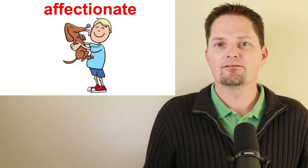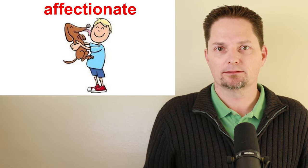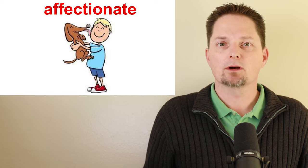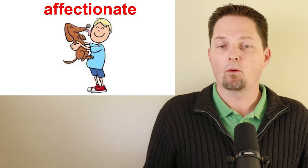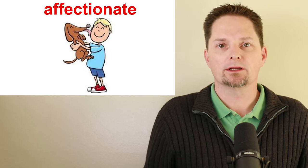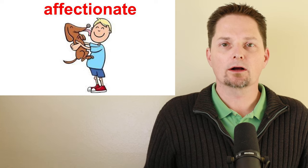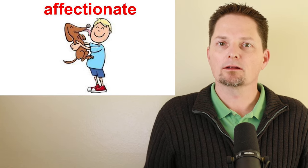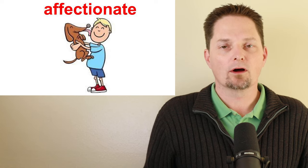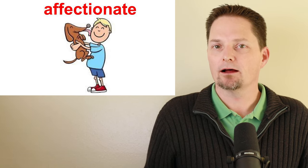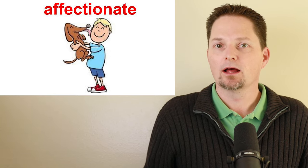Our next word is affectionate. Affectionate is a description. It describes a person or a dog that shows their emotion — they show their love. The dog is showing the boy that the dog loves him. So the dog is affectionate; he is showing his love. The dog is very affectionate.